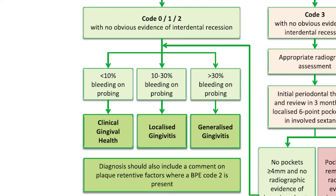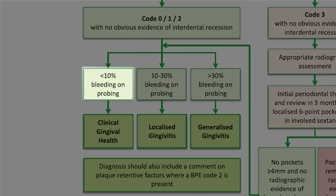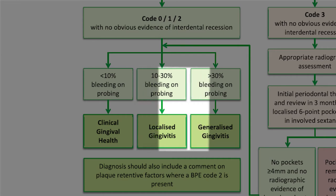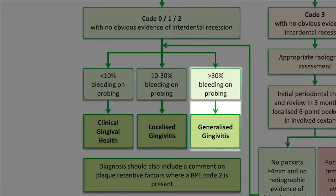Let's start by discussing a patient who scores zeros and ones on their BPE. If while carrying out your BPE you saw less than 10% bleeding on probing, this indicates clinical gingival health. If you saw between 10 and 30% bleeding on probing, you'd diagnose them with localized gingivitis. And finally, if there were more than 30% bleeding on probing, this would be a generalized gingivitis.